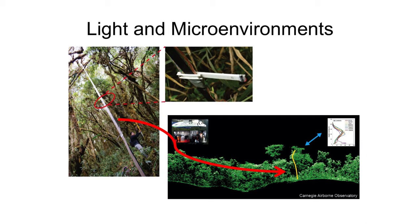Other things we can do is use light measurements and other environmental measurements to produce much better constrained models of light throughout these forest plots. As we measure vertical light profiles, we can couple that with these lidar point clouds and understand how light and structure are interacting in these forests, and have a better idea of how these things might interact in a changing world.